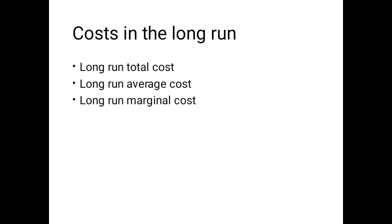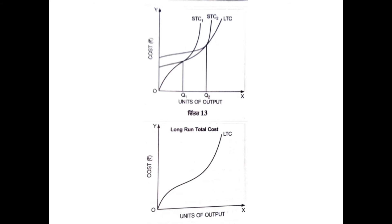Now the concept of long run cost. In the long period, all factors of production will be variable, so fixed cost, variable cost, and other concepts will be finished. The average cost curve and long run marginal cost curve — the total cost curve will be derived. Short run costs will be added to form the long run total cost curve.